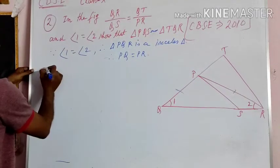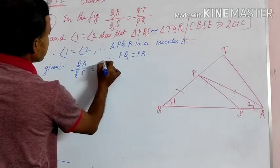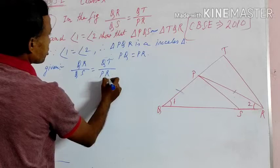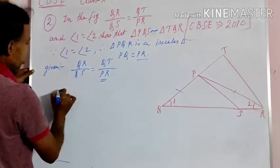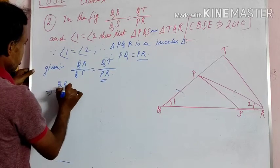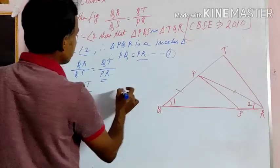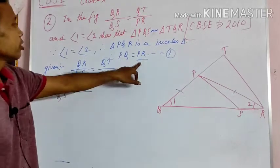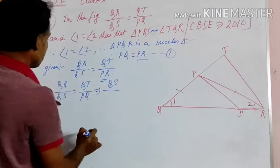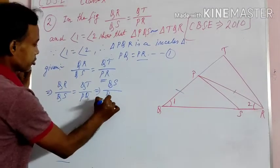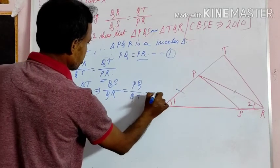Now, given here: QR by QS is equal to QT by PR. In place of PR, we will substitute PQ from equation 1. So we can write QR by QS is equal to QT by PQ. Taking the reciprocal, QS by QR is equal to PQ by QT. Suppose this is equation 2.